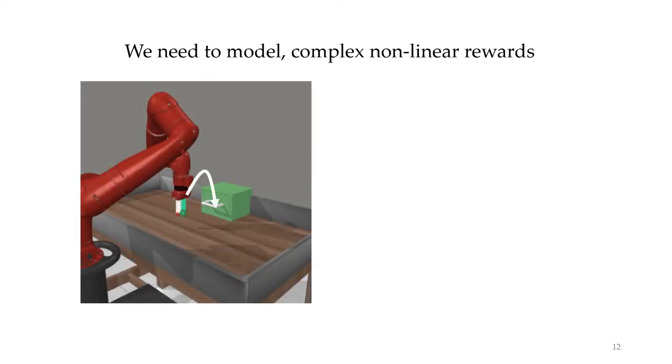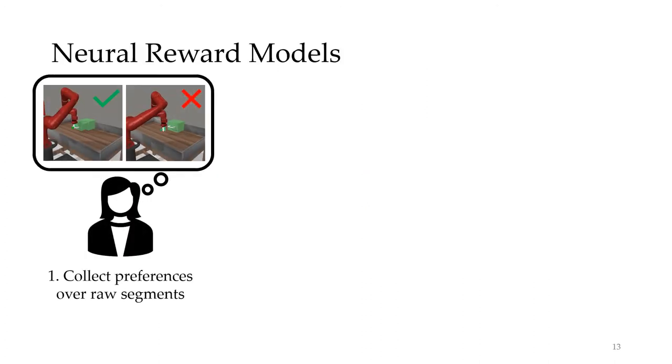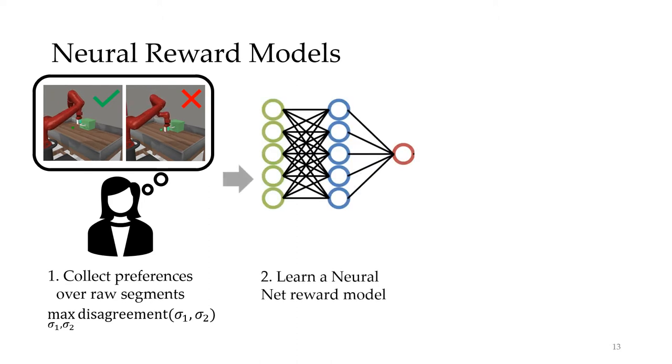Instead, we need to model non-linear complex reward functions. To do so, we can use neural networks. Expressive neural networks don't require feature design, so we can just directly collect preferences from humans. Comparisons are often chosen by maximizing the disagreement of an ensemble of reward models. We can take these preferences and learn a neural model by backpropagation.